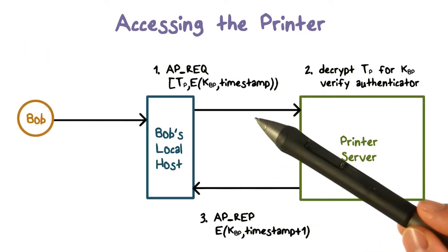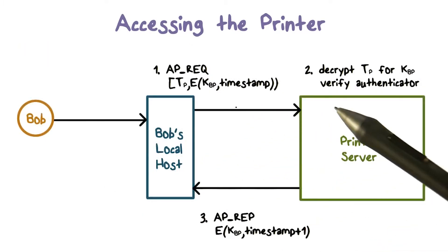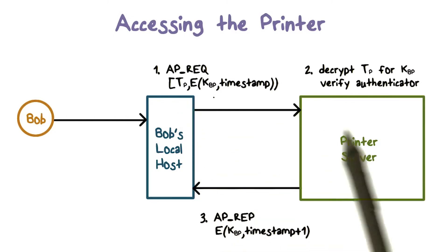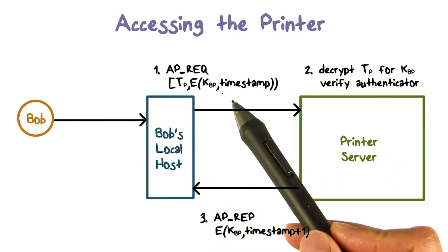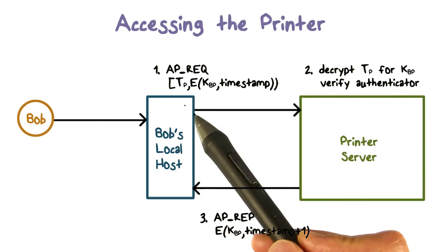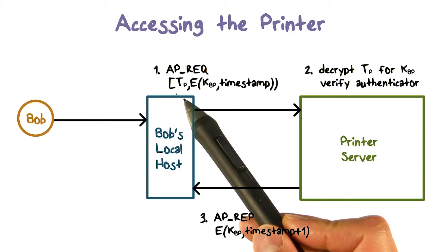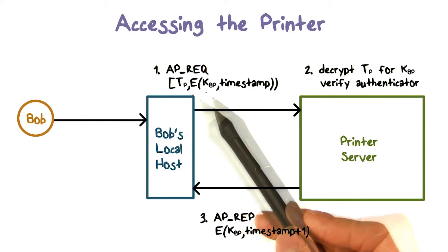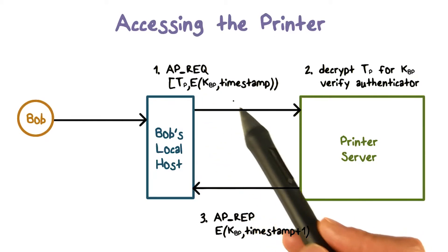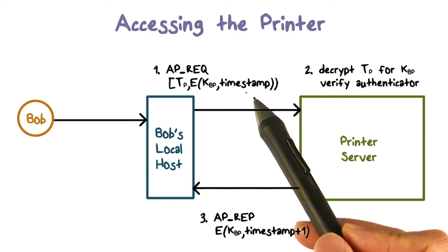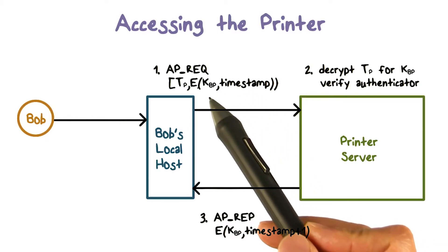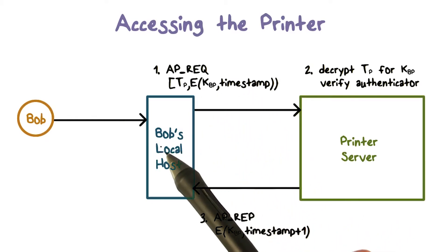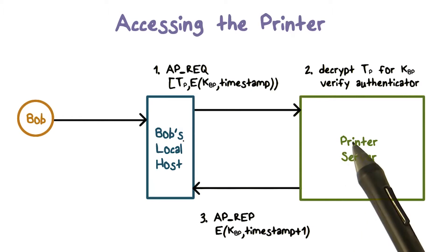Then Bob's local host can authenticate itself to the printer. It sends a message to the printer containing the ticket. The authentication request contains the ticket and an authenticator, which is the ciphertext of the current timestamp encrypted using the shared key KBP between Bob's local host and the printer.